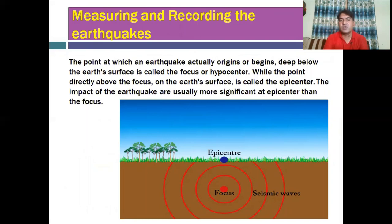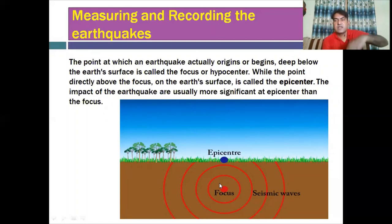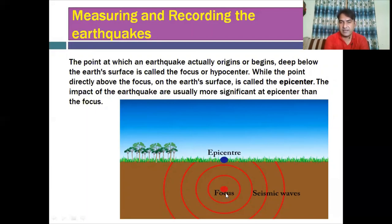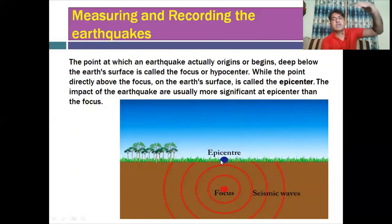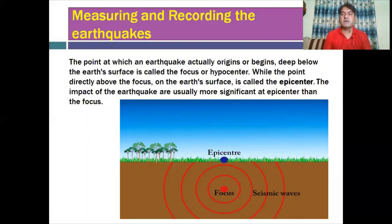The point at which an earthquake actually originates, deep inside the Earth below the surface, is called the focus or hypocenter. This is the starting point below the surface of the Earth where the earthquake begins — we call this the focus or hypocenter. While the point directly above the focus on the surface is called the epicenter. The impact of earthquakes is usually more significant at the epicenter than at the focus.